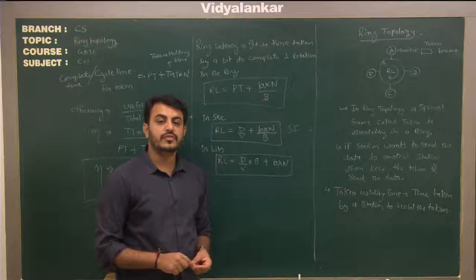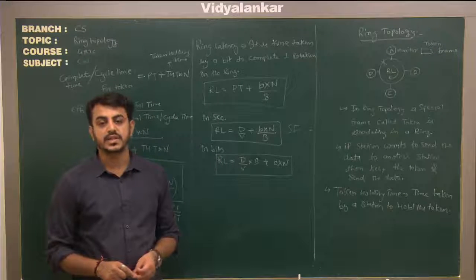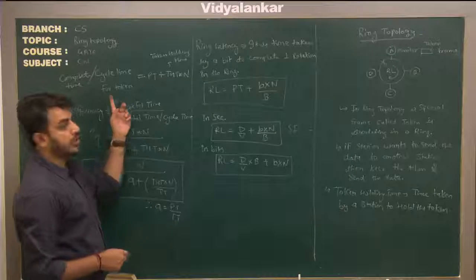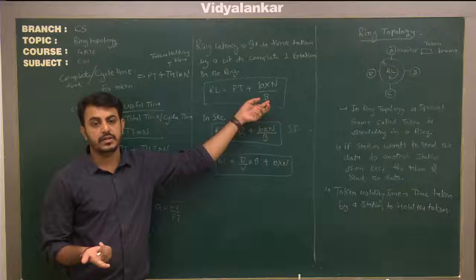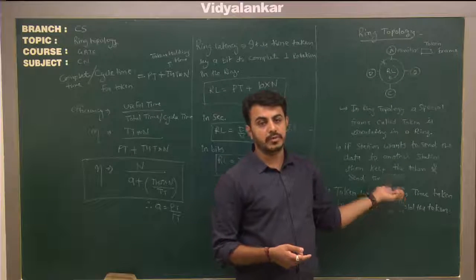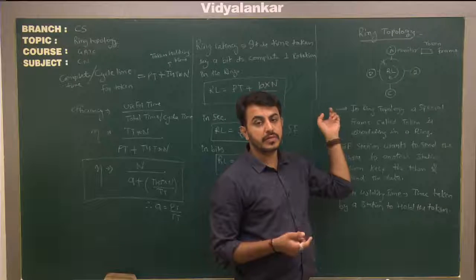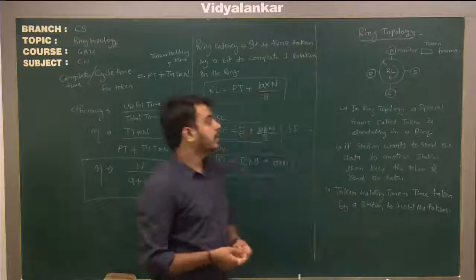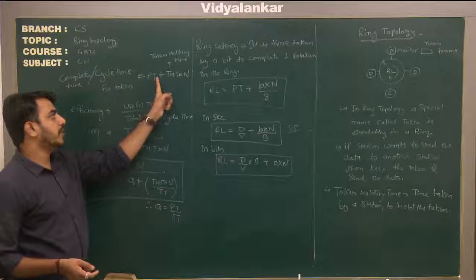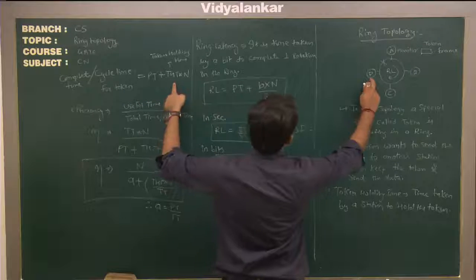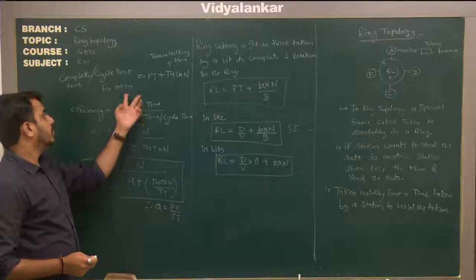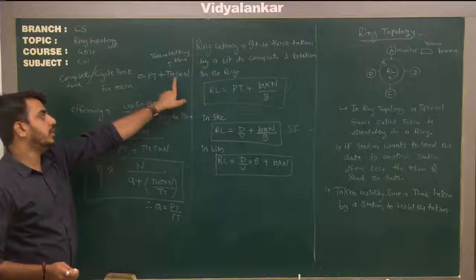Before calculating efficiency, we need to calculate the total time or cycle time for the token. Total time equals propagation delay (PT) plus token holding time multiplied by the number of stations n. Every station takes some time to hold the token, and there are n stations, so: Total time = PT + (token holding time × n). This is analogous to ring latency.